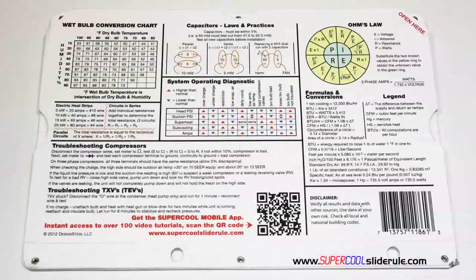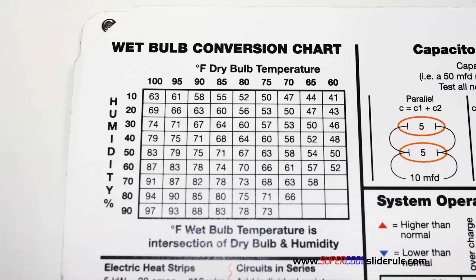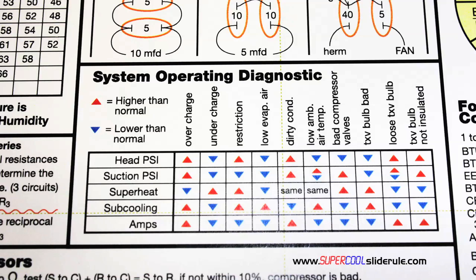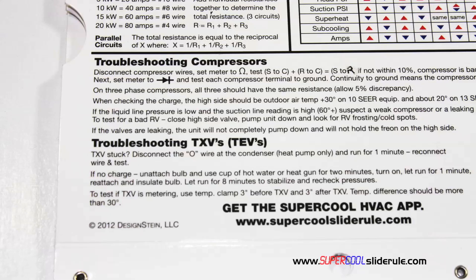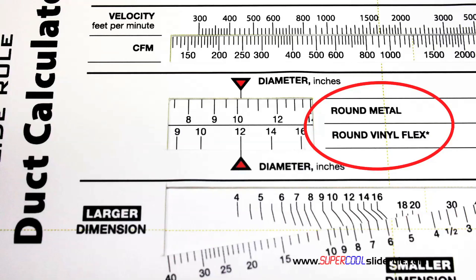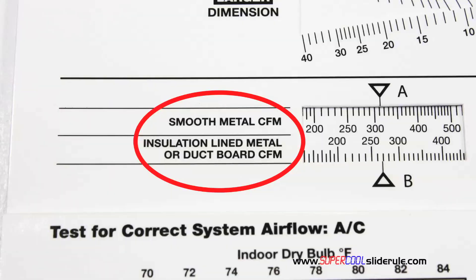The back cover contains required formulas, capacitor rules and practices, a wet bulb conversion chart, how to perform computations on series or parallel circuits, an electric heat strip guide, a complete system troubleshooting diagnostic chart, and how to troubleshoot compressors and TXV. Inside is packed with even more information. It performs sizing of both metal and flexible duct, and has the only direct reading conversion from smooth metal to insulation-lined metal we've ever seen.